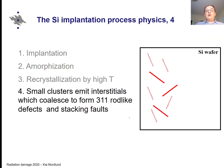Schematically, after the point defect clusters, the small clusters first emit all their interstitials, which go into {311} defects — rod-like defects — and to some extent also stacking faults, which were dealt with earlier in the dislocation section of the course.